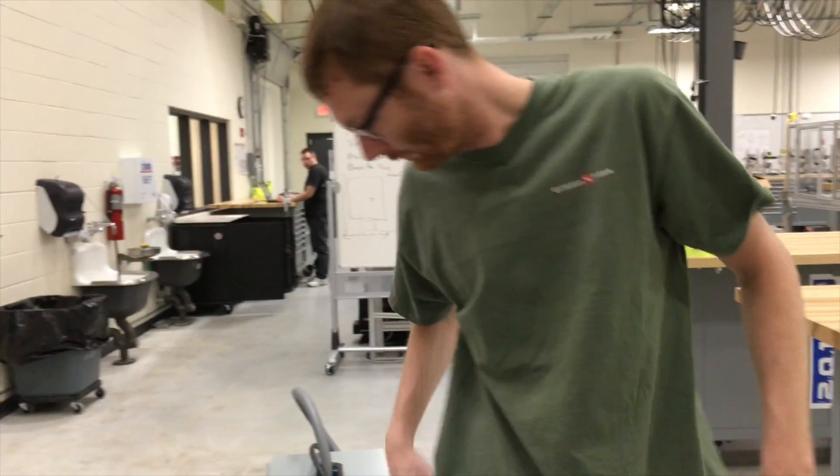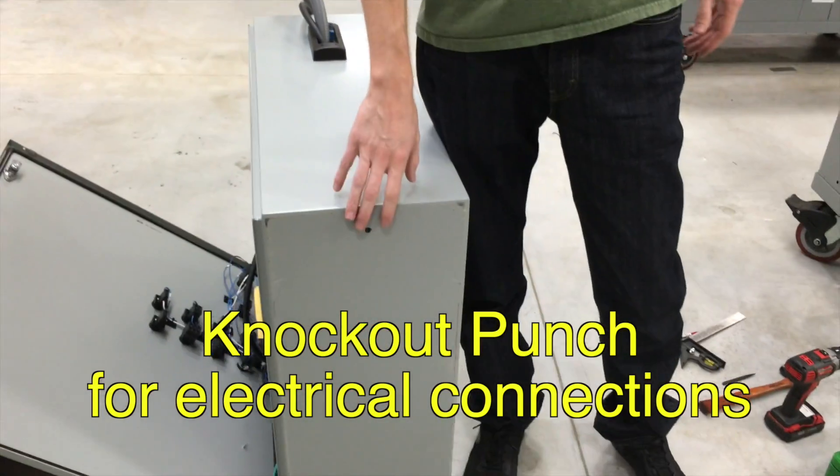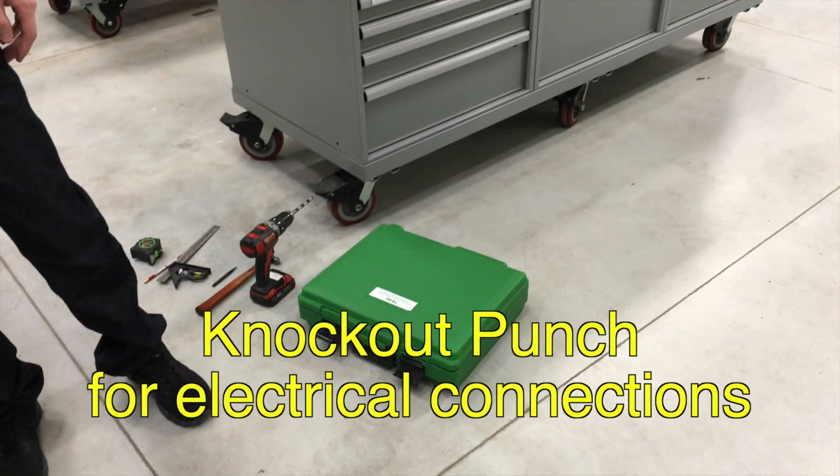All right, Brendan, what are we doing? All right, we're going to knock out some holes on the bottom of this cabinet. I'm using the Greenlee hydraulic knockout punch kit.